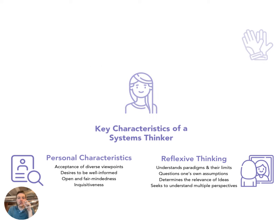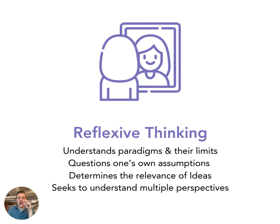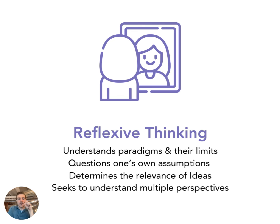So just going to quickly walk you through those. We'll start off with reflexive thinking, and I think this is maybe the most important thing — like understanding paradigms, understanding mental models of what's constructing your thinking and view of the world, and also the limitations of those. You'll hear systems thinkers talk a lot about that. Otherwise, you're unlikely to really come up with ways of thinking and viewing that are truly systemic, because you're not really aware of where they're coming from. So you need to be a critical thinker, open to unpacking your mental models and being reflexive.